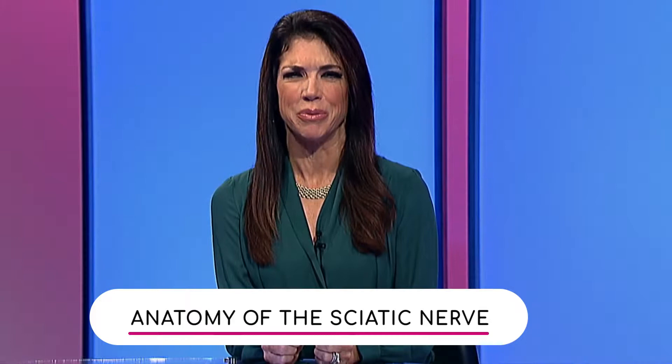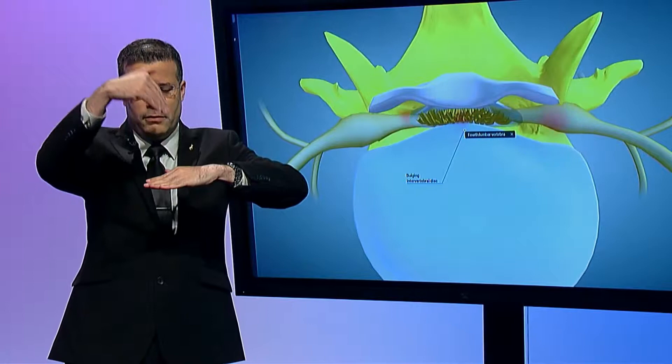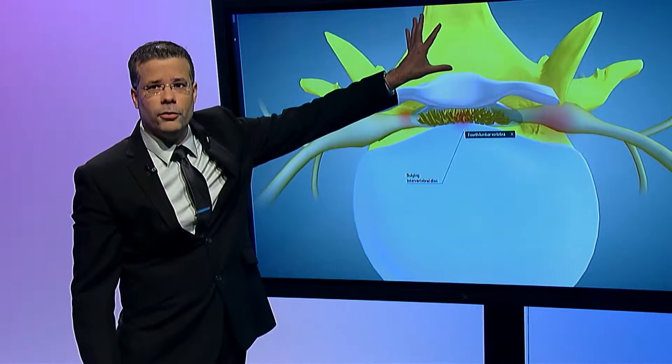We have another image of a bulging disc — can you tell us what this is? So basically, looking at the spine in cross-section, we're looking from the top towards the feet. We have the disc in here and then we have the bones in the back.